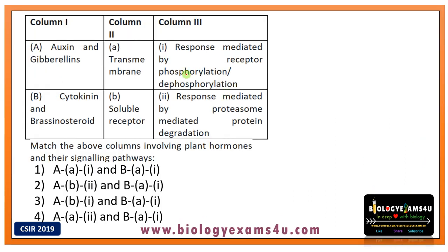Next question: Match Column one — A, auxin and gibberellin; B, cytokinin and brassinosteroid — with Column two: transmembrane receptor, soluble receptor — and Column three: response mediated by receptor phosphorylation and dephosphorylation; response mediated by proteasome-mediated protein degradation. We have to match these correctly.